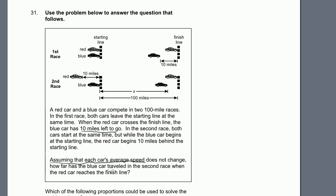How far has the blue car traveled in the second race when the red car reaches the finish line? So the red car reaches the finish line, the blue car has traveled distance x. That's what we solve for. This statement — assuming that each car's average speed is the same — is a big clue. It tells us their average speed is the same from race to race.